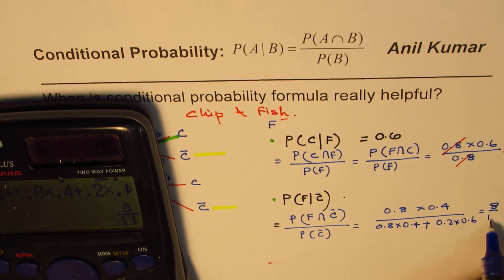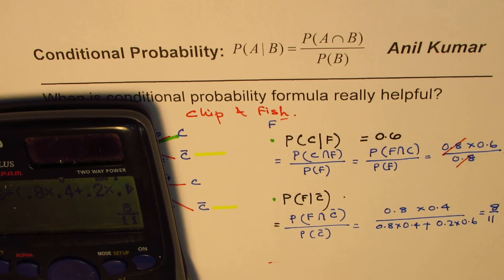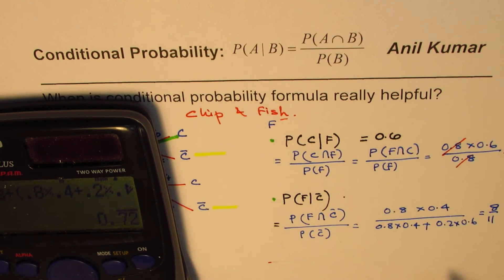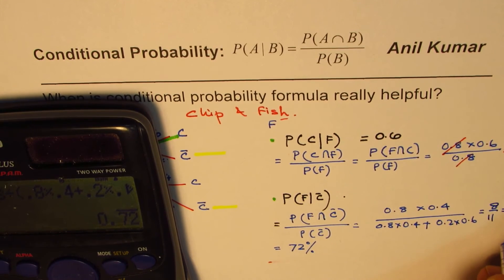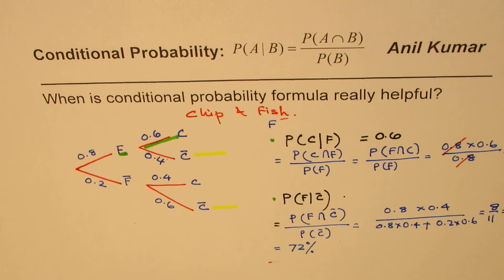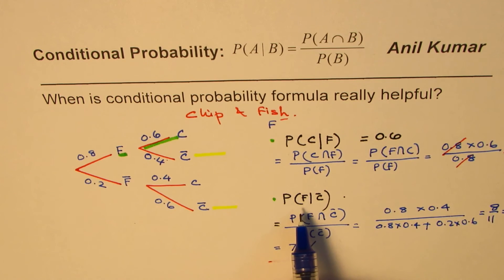You could write 8 over 11, which is also the correct answer, and in decimals, it is around 72%. So that is equal to 72%, or you could say 0.72, or 8 over 11, as the case may be. But I hope with this example, it is very clear that this formula is really helpful and in difficult situation, it really helps to use the formula.